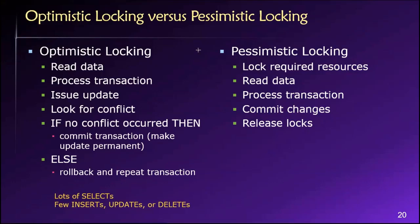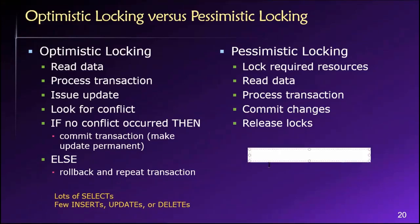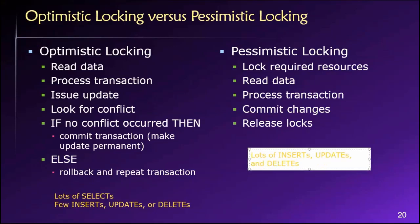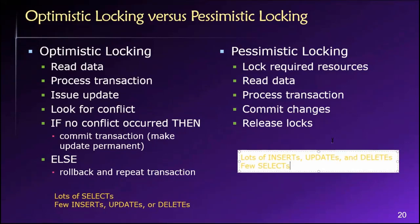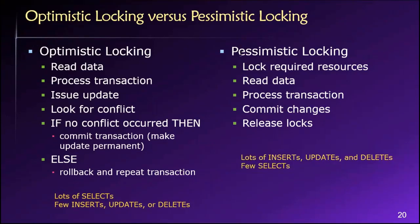Let's contrast that with pessimistic locking. Pessimistic locking would be an obvious choice in situations where we have lots of changes being made to the data — lots of inserts, updates, and deletes — and comparatively few selects. If we have a database processing environment characterized by lots of changes but not a lot of reads, then we would probably want to use a pessimistic locking strategy.